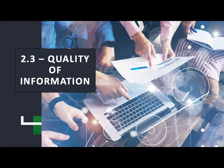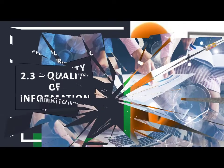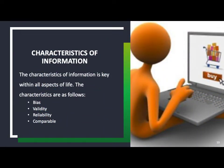Next is the quality of information provided. There are four different characteristics, and you need to be aware of these for both businesses and individuals. The first one is bias — is that information one-sided? For instance, if somebody supported a specific football team, they are going to be biased toward that team, compared to people who don't follow football, who would give an unbiased opinion.